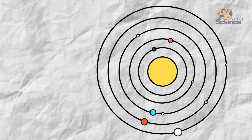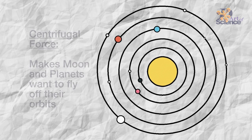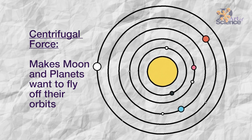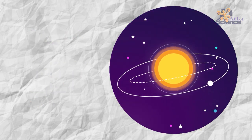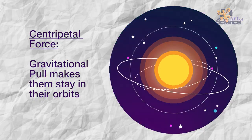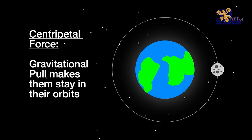Similarly, the moon and the planets experience a centrifugal force, which makes them want to fly away from their revolutionary orbits. But the gravitational pull between the sun and the planets and the earth and the moon acts as the invisible